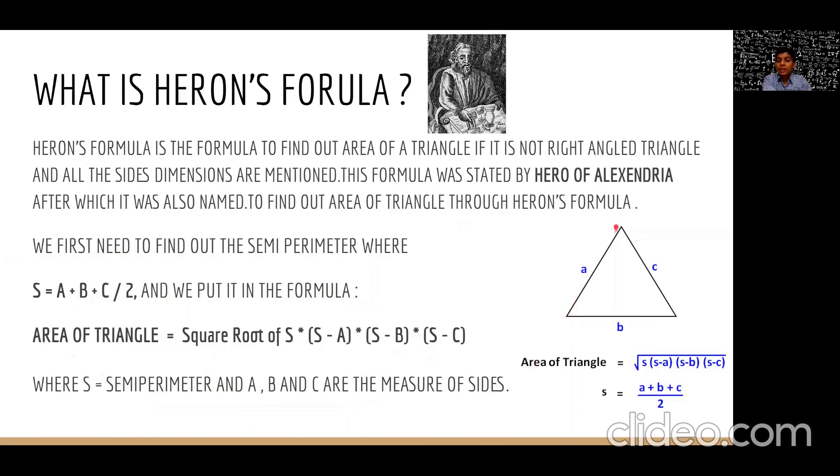For example, here is a triangle. This is a, b and c. The semi-perimeter will be the perimeter divided by 2 and we put it in the formula of Heron's formula and we make it as square root of s into s minus a into s minus b into s minus c.